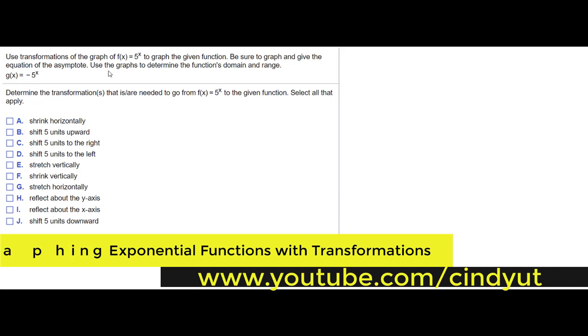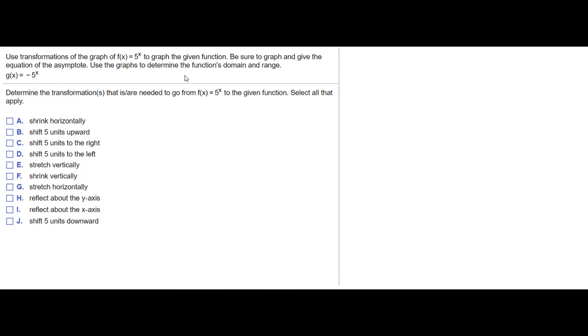We are given the function f of x equals 5 to the x, and from our last example, we know we could pick some points to graph that.